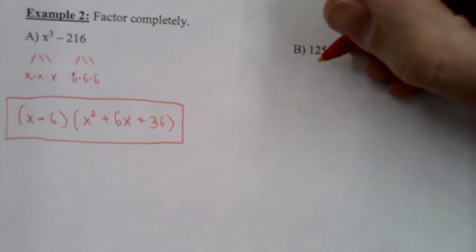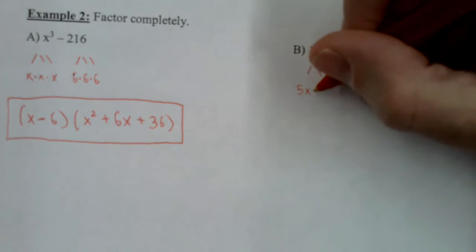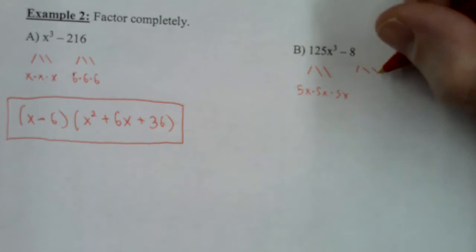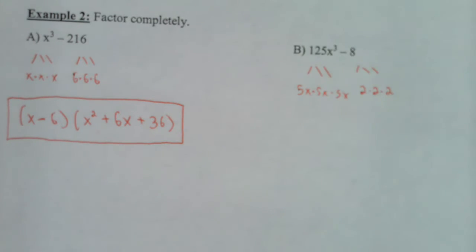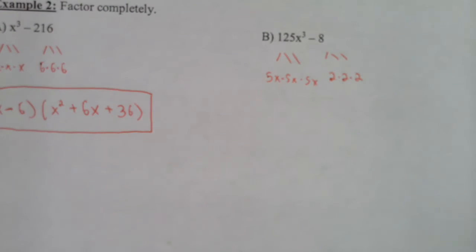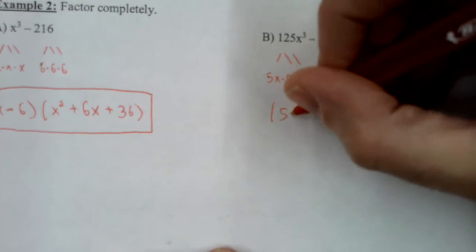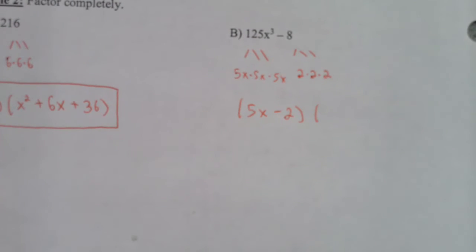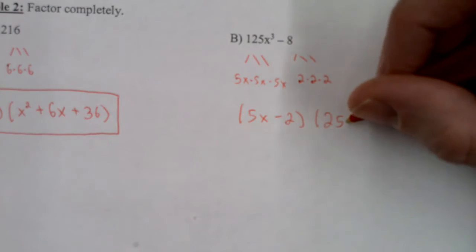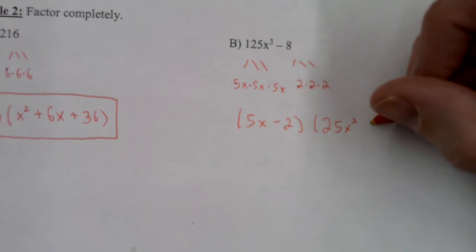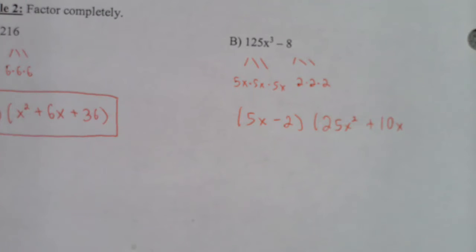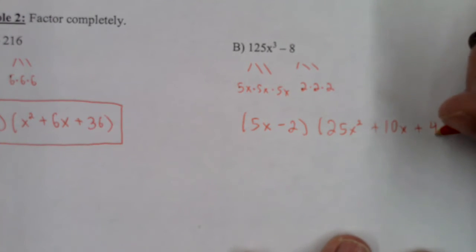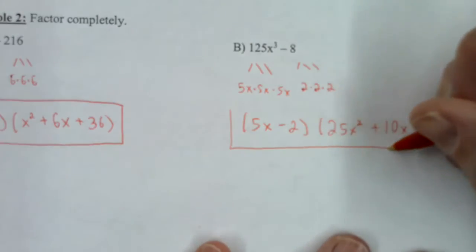125x³ − 8. 125x³ is a perfect cube because it equals 5x × 5x × 5x. And 8 is a perfect cube because it equals 2×2×2. Factor: (5x − 2). Then a² means (5x)² = 25x². Plus a×b gives plus 10x. Plus b² gives plus 4. So: (5x − 2)(25x² + 10x + 4) — factored all the way.